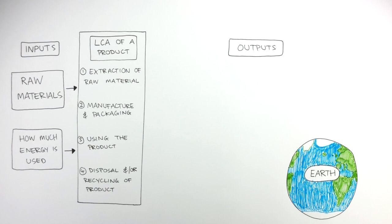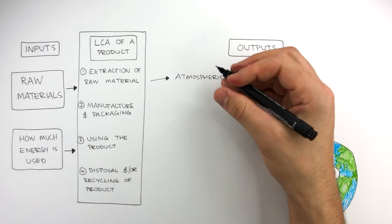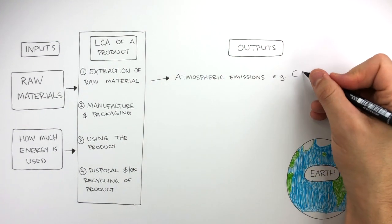One output of an LCA that must be considered is atmospheric emissions. For example, carbon dioxide.